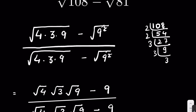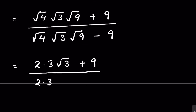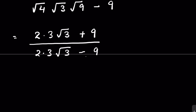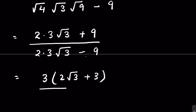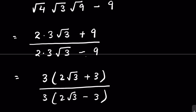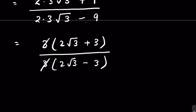This gives us 6√3 + 9 − 9 ... actually we take 3 as common: numerator is 3(2√3 + 3) and denominator is 3(2√3 − 3). The two 3s cancel, leaving (2√3 + 3) / (2√3 − 3). Now let's rationalize by multiplying and dividing by (2√3 + 3).